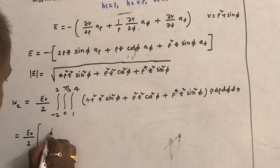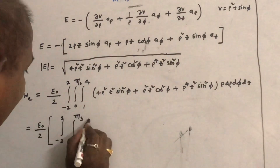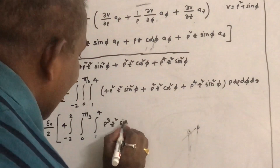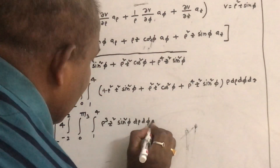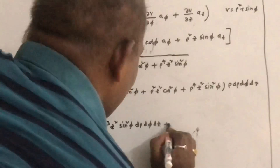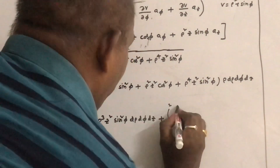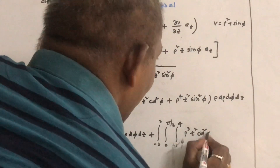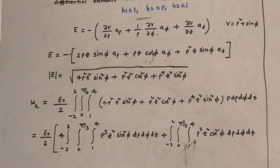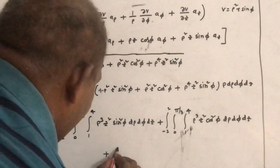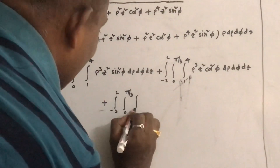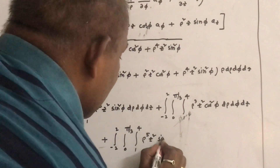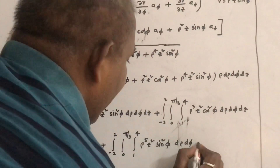Separate these terms and integrate. The first integral is: ∫₋₂² ∫₀^{π/3} ∫₁⁴ 4ρ³ z² sin²φ dρ dφ dz. Plus the second: ∫₋₂² ∫₀^{π/3} ∫₁⁴ ρ³ z² cos²φ dρ dφ dz. Plus the third: ∫₋₂² ∫₀^{π/3} ∫₁⁴ ρ⁵ z² sin²φ dρ dφ dz.